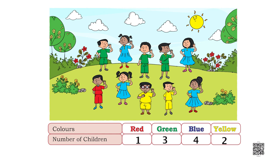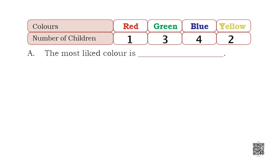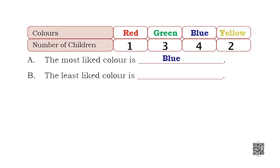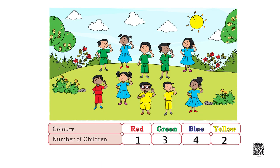Based on this table, you have to answer some easy questions. Question A: the most liked color is blue, because four children are wearing blue. Question B: the least liked color is red, because only one child is wearing red.